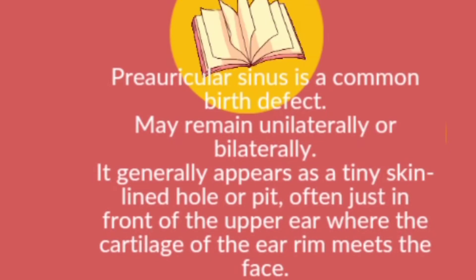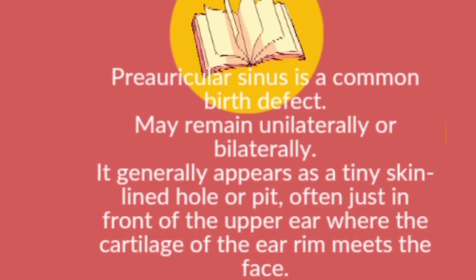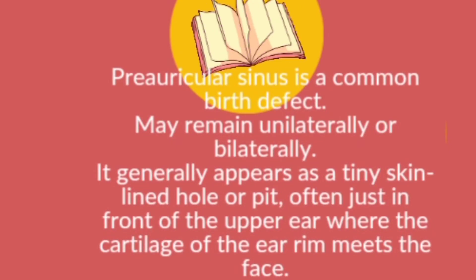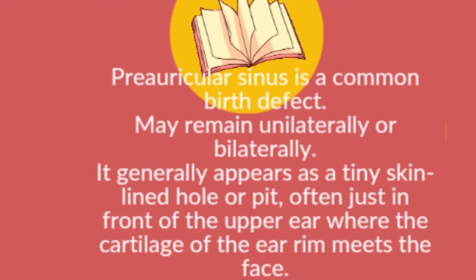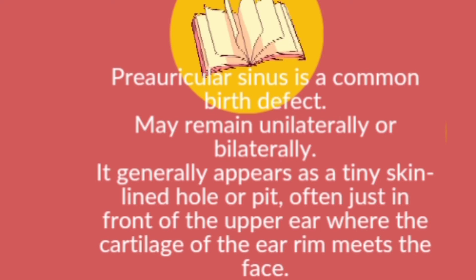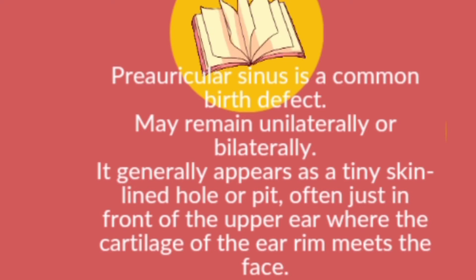Preauricular sinus is a common birth defect that may occur unilaterally or bilaterally. It generally appears as a tiny skin-lined hole or pit, often just in front of the upper ear, where the cartilage of the ear rim meets the face.